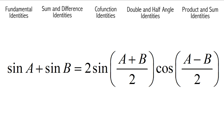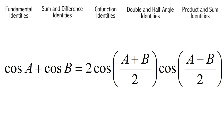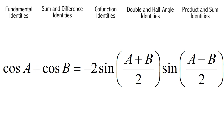Sine of angle A plus sine of angle B is equal to 2 times sine of angle A plus B over 2, times cosine of angle A minus B over 2. Cosine of angle A plus cosine of angle B is equal to 2 times cosine of angle A plus B over 2, times cosine of angle A minus B over 2. Cosine of angle A minus cosine of angle B is equal to negative 2 times sine of A plus B over 2, times sine of A minus B over 2.